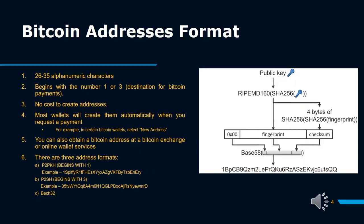Bitcoin address format. A Bitcoin address is an identifier, or account number, starting with 1 or 3 and containing 27 to 34 alphanumeric Latin characters, except 0, O, and I. Bitcoin addresses can also be represented as a QR code. The addresses are anonymous and do not contain information about the owner. A Bitcoin address can be obtained for free using, for example, Bitcoin software. Most wallets will create them automatically when you request a payment.